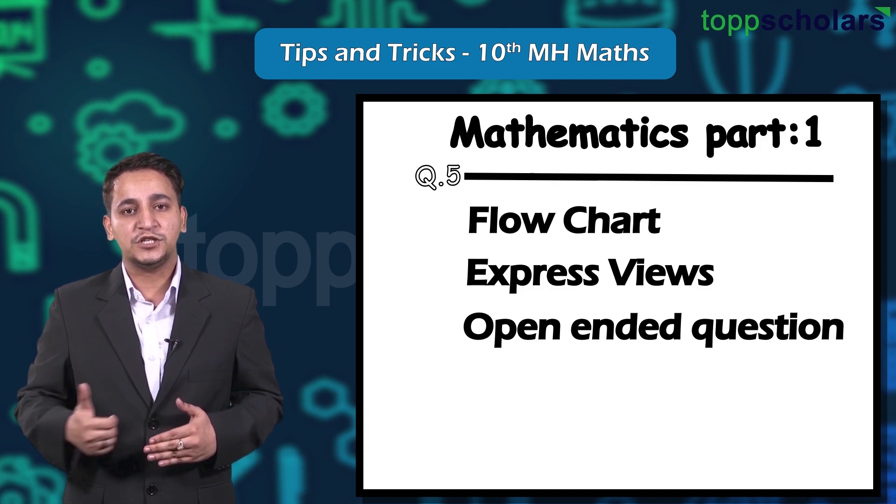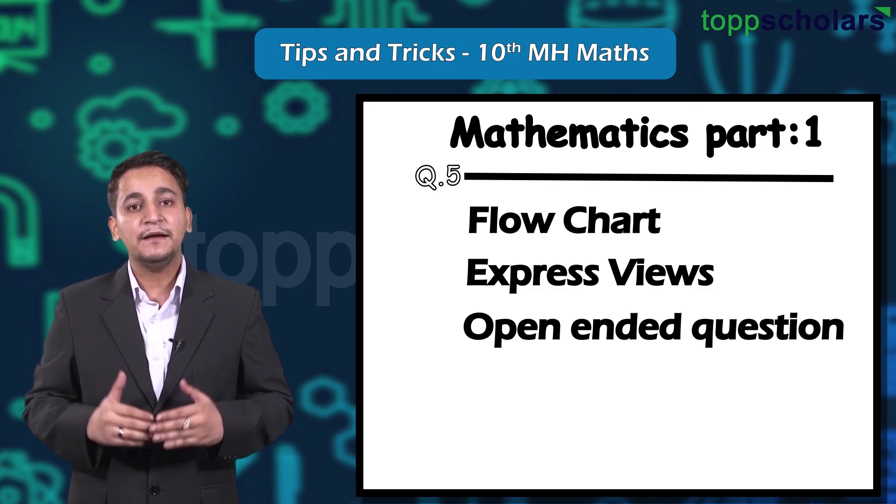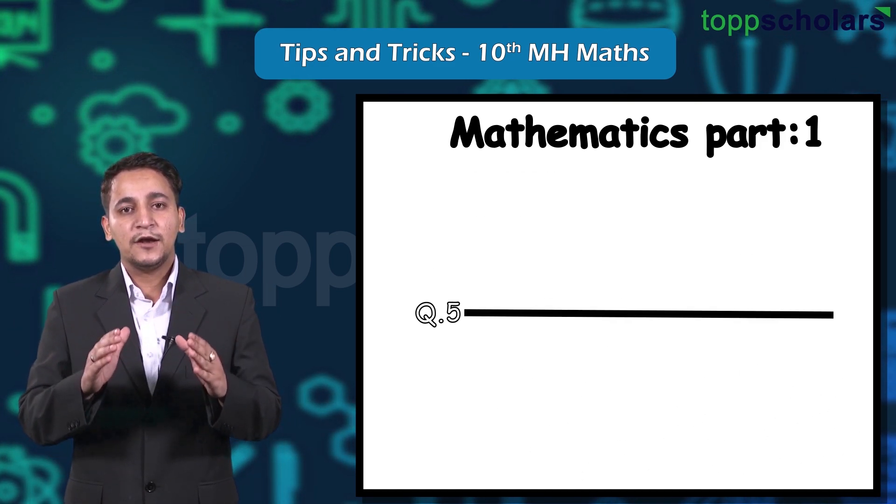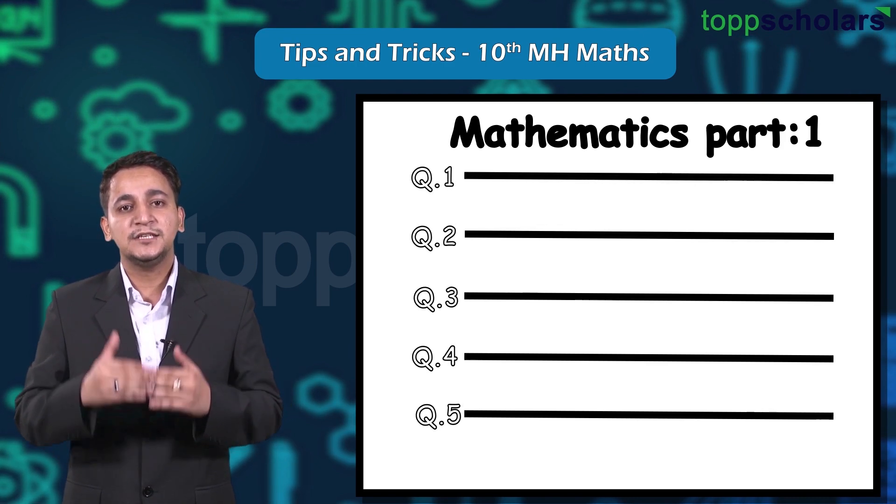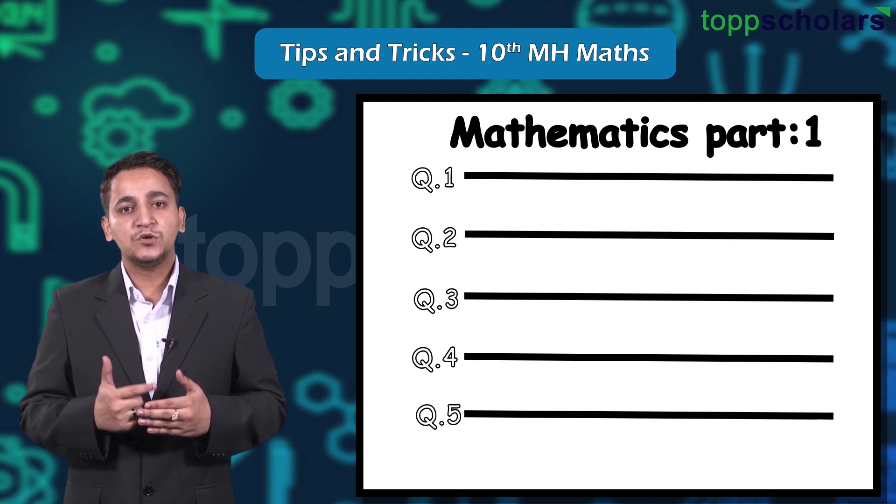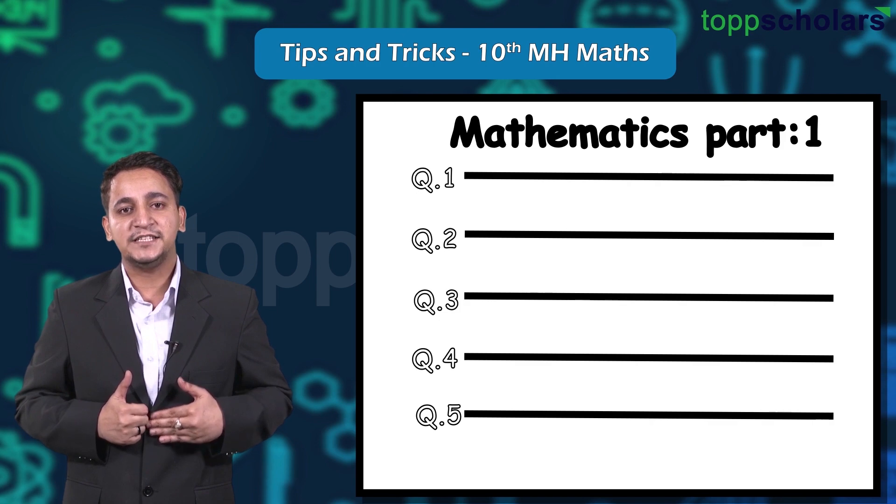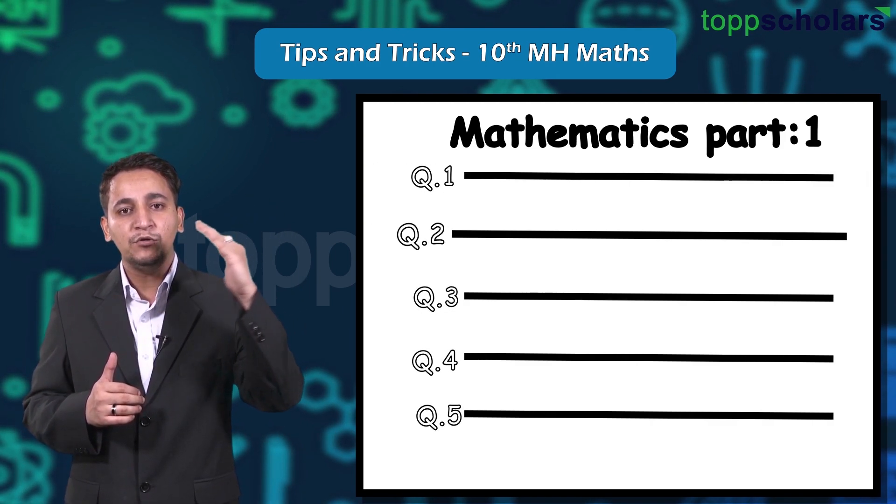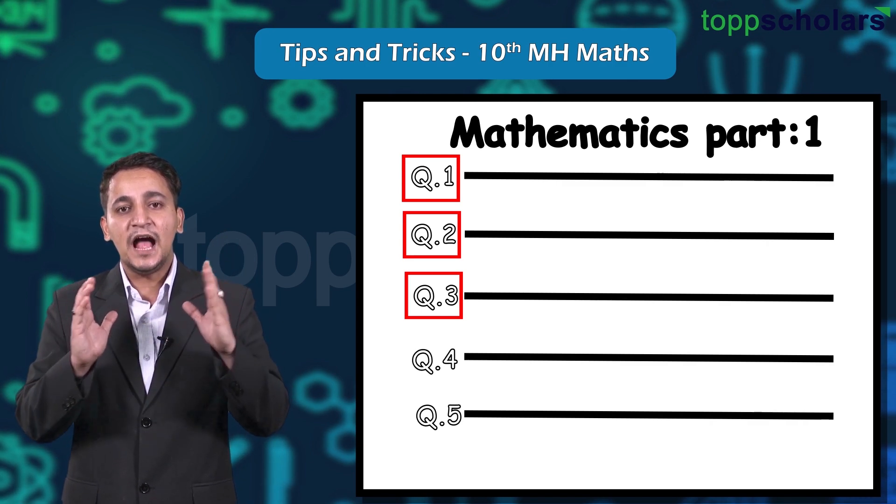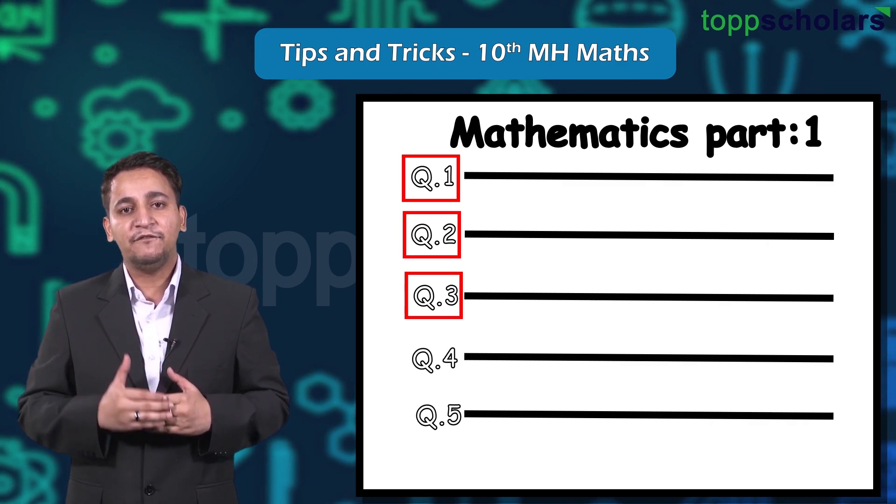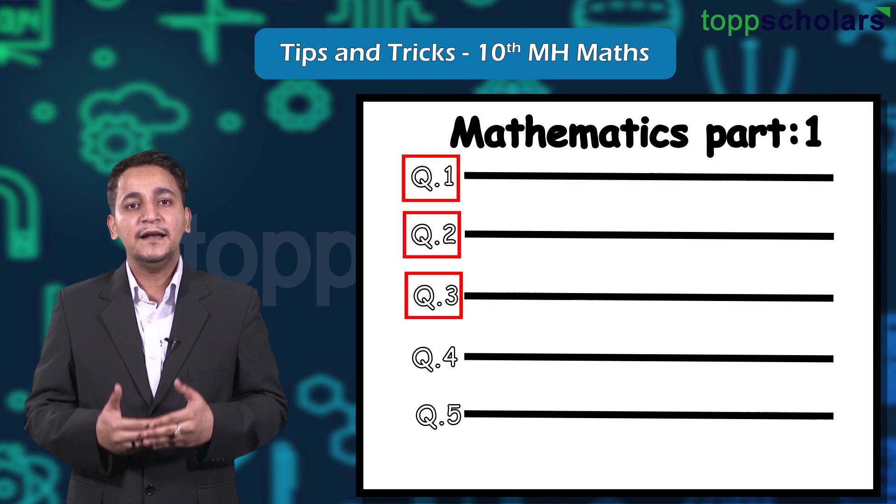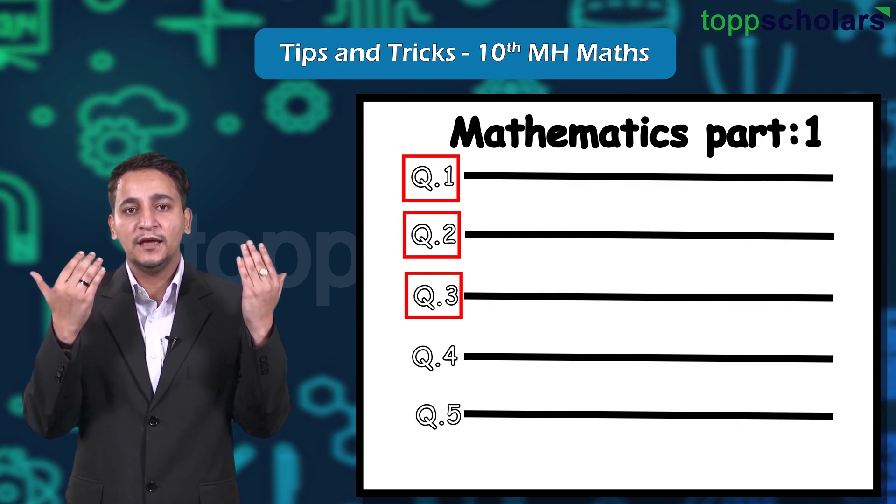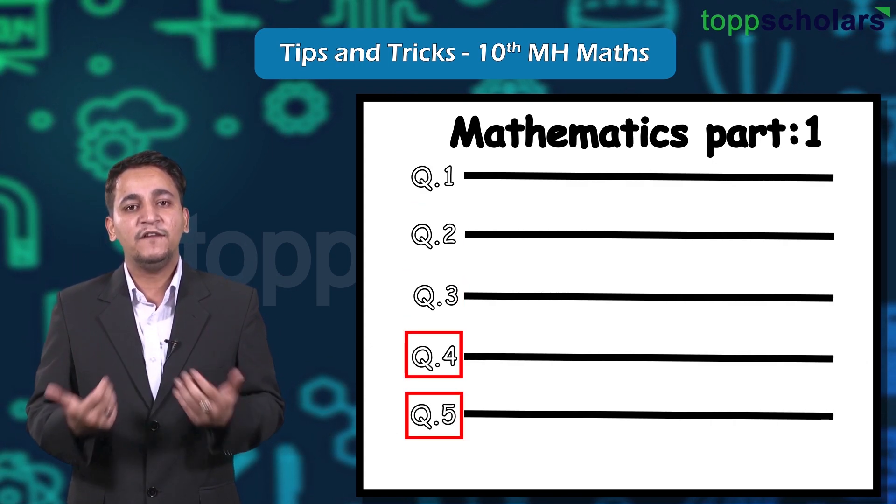In such kind of questions, it will obviously take more time. So in order to optimize your efficiency, students should follow the strategy that they should attempt question numbers 1 to 3 first as they are directly related to the textbook, and then move on to the fourth and fifth questions.